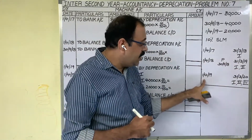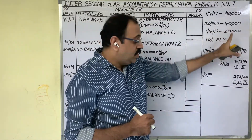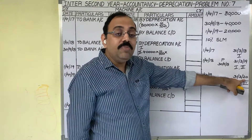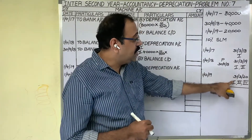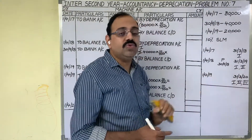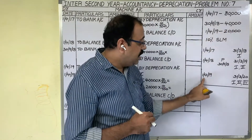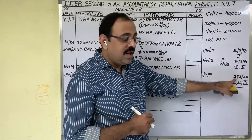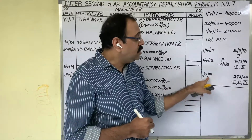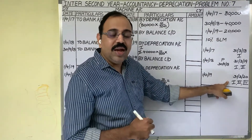Then in the 3rd year, they bought another asset on 1st April 2019 for 20,000 rupees. So at the end of the 3rd year, that is on 31st March 2020, the firm has 3 machines. The 1st machine worth 80,000 was used from 1st April 2019 to 31st March 2020 — 12 months. The 2nd asset worth 40,000 was used for the full year, and the 3rd asset worth 20,000 was also used for the full year, since it was purchased on the starting date of the year. So this is the question — let us solve this problem.